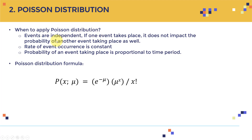When should you apply Poisson distribution? First, the events must be independent — if one event takes place it does not impact the probability of another. For example, customers visiting a restaurant don't know each other and are independent. Additionally, the rate of event occurrence must be constant, and the probability of an event must be proportional to the time period.